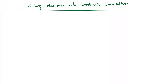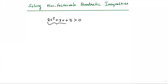In this video we are going to see how to solve non-factorable quadratic inequalities. Let us consider a quadratic inequality that is 2x squared + 3x + 5 > 0. This quadratic expression is non-factorable. So how do we solve this one?